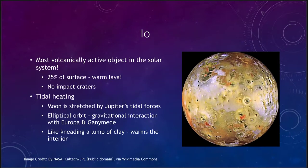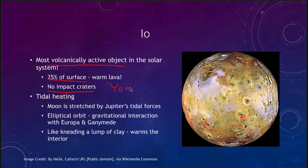Io is the most volcanically active object in the solar system — more volcanically active than the Earth — and is about the size of our own moon. In fact, about 25% of the surface is warm lava, so it is just a lava-covered world orbiting around Jupiter. It has no known impact craters, which makes it the youngest solid surface we know of in the solar system.